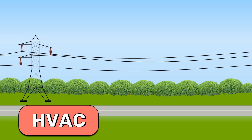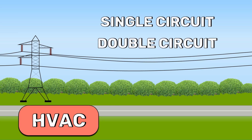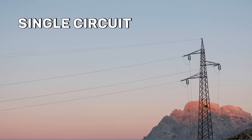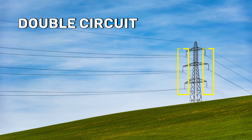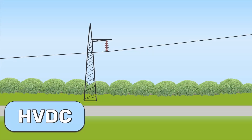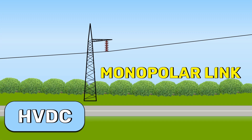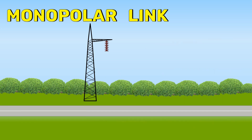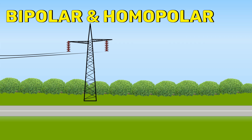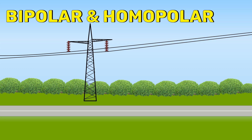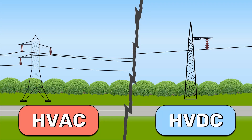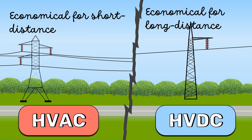In HVAC, we have single circuit transmission lines and double circuit transmission lines. A single circuit transmission line has three sets of conductors, while a double circuit transmission line has two independent circuits, meaning it has six conductors. The three types of HVDC links are monopolar link, bipolar link, and homopolar link. The monopolar link has only one conductor, while bipolar and homopolar links have two conductors. HVAC transmission is economical only for short-distance transmission, while HVDC is economical for long-distance transmission.